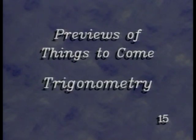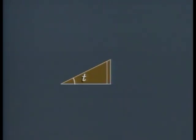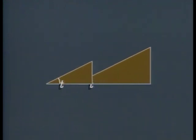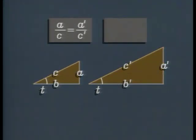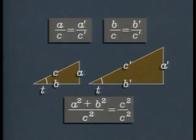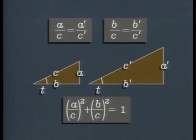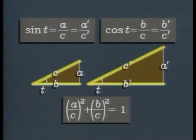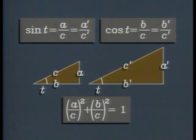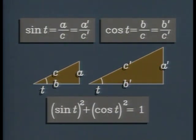Suppose we call this angle T. If we expand or contract a triangle, we change the lengths of the sides, but we don't change the angle T or the two ratios A over C or B over C. The Pythagorean theorem tells us that the squares of these two ratios add up to one. The ratio A over C depends on the angle T and is called the sine of T. The ratio B over C is called the cosine of T. The Pythagorean theorem shows that the square of sine T plus the square of cosine T is equal to one. This equation, which is true for any angle T, is a fundamental result in trigonometry.